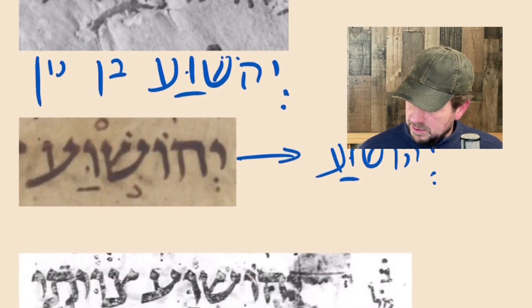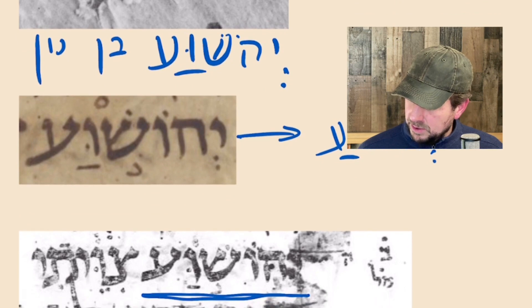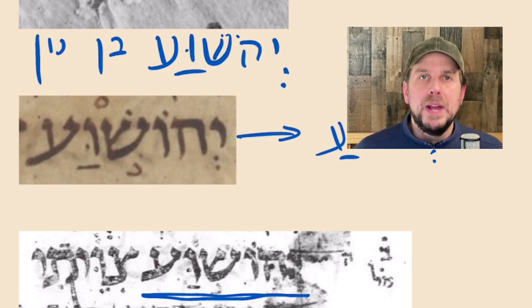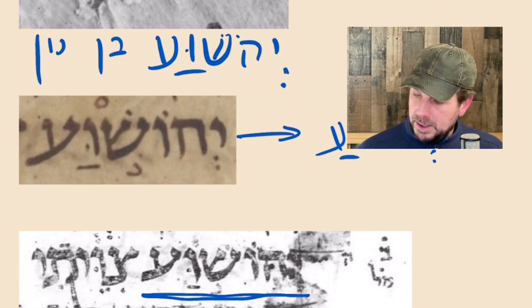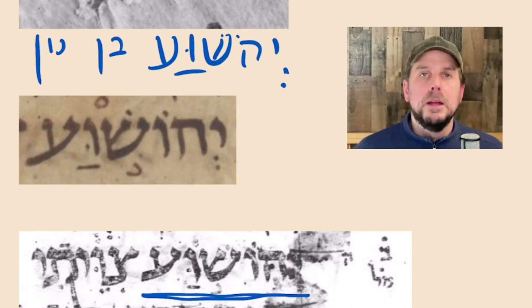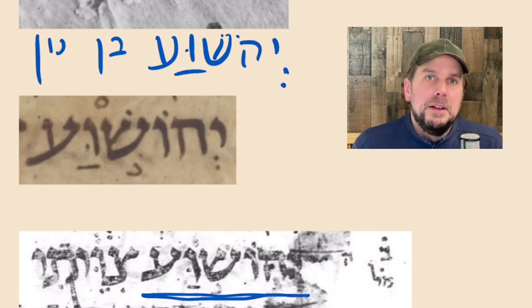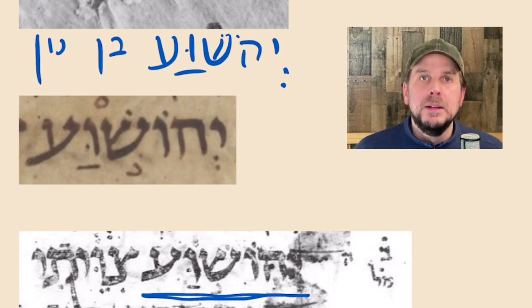And there are others, like a Masoretic note here from another Masora text. Because there are, in fact, two times where it's spelled Maleh — which means full spelling — Yod, He, Vav, Shin, Vav, Ayin. So for those who are teaching Yahushua or some strange variant like that, that's an invented word, which they can only accomplish in English by actually being ignorant of the scribal tradition.